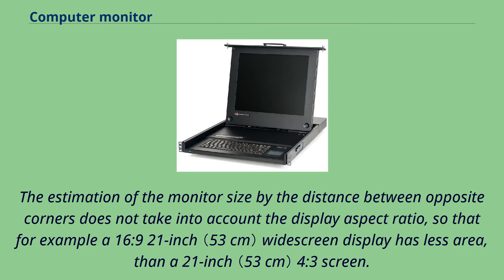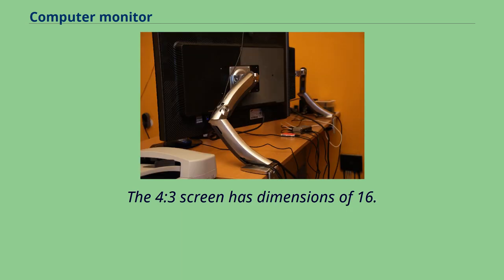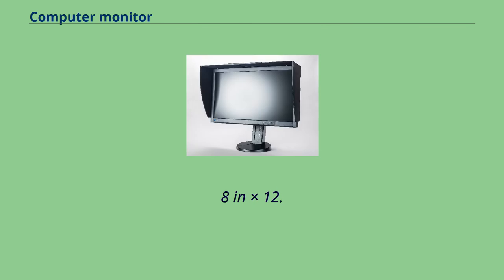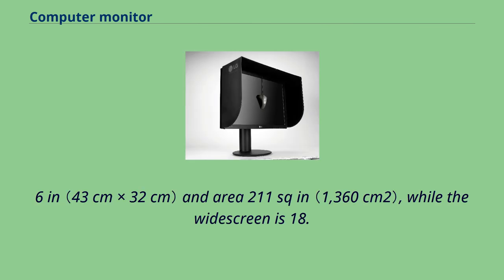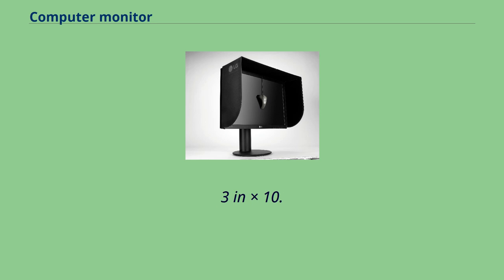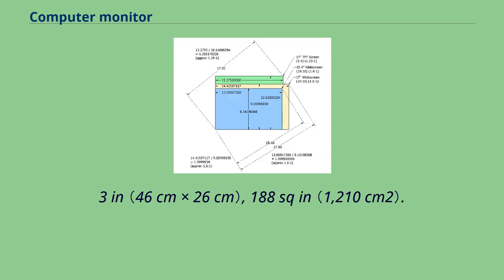The estimation of monitor size by the distance between opposite corners does not take into account the display aspect ratio, so for example a 16:9 21-inch widescreen display has less area than a 21-inch 4:3 screen. The 4:3 screen has dimensions of 16.8 inches by 12.6 inches, an area of 211 square inches, while the widescreen is 18.3 inches by 10.3 inches, giving 188 square inches.